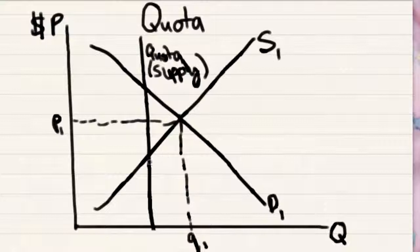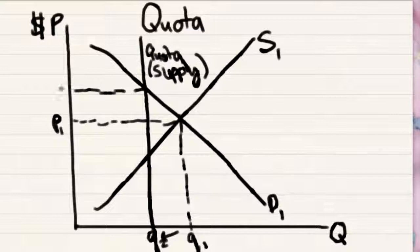Because this is the maximum quantity that the government says a producer, or all the producers can produce. So, what happens with quotas is the quantity decreases significantly, and we get an increase in the price of a good.